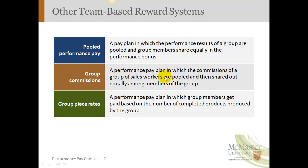With group piece rates, the group members get paid based on the number of completed products produced by the group. Depending on what the group produces, this might be a way to allocate some incentive if they've met their goals on a piece rate basis.